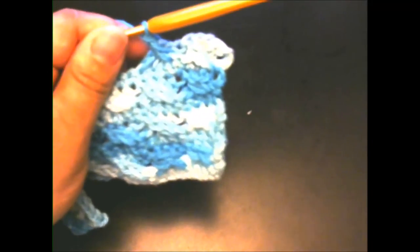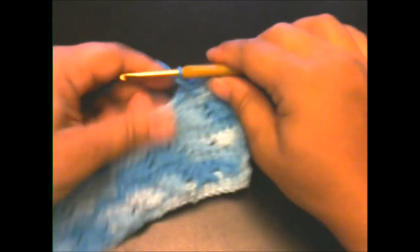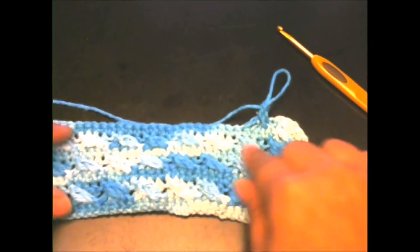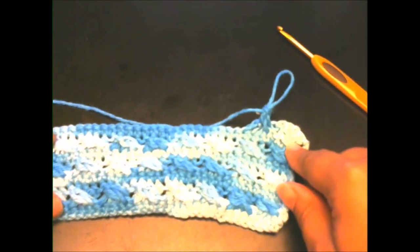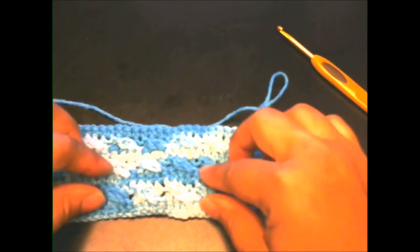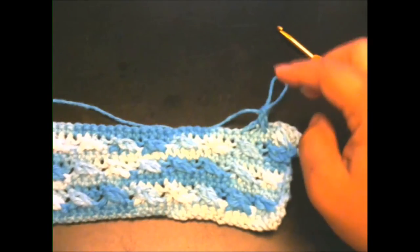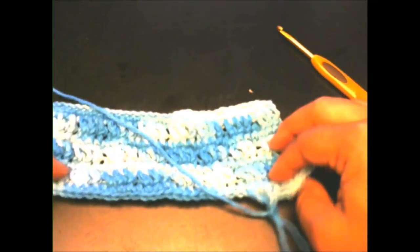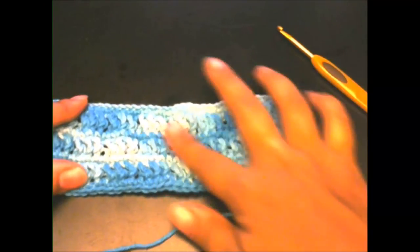You want to do that all the way across and you're going to get this very pretty pattern. That's it, that's all it is to the pattern. Once you finish this row across, do a single crochet and then start your cable row again. This is how it would look on the back.